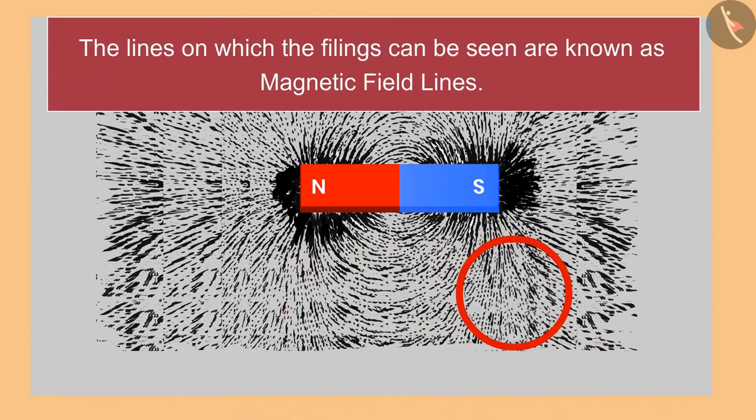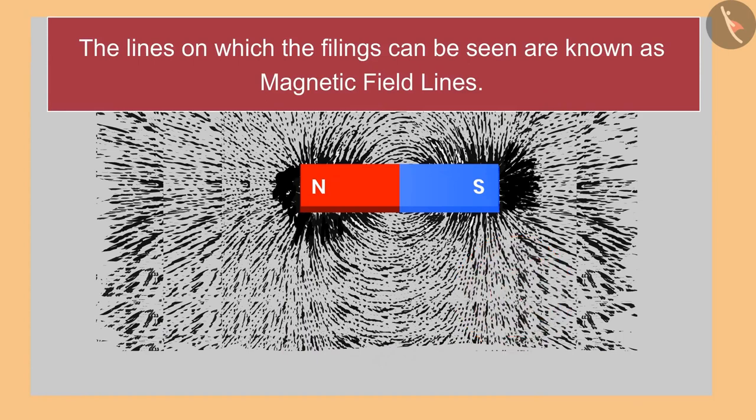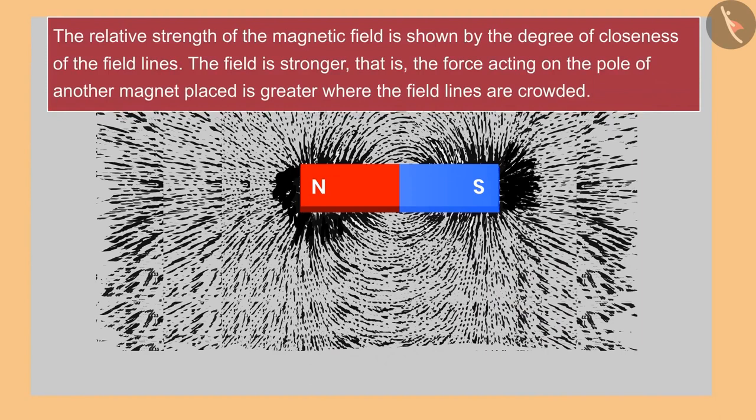If we carefully observe the iron filings, then we will find that at one place they are collected very closely and at other places very less.